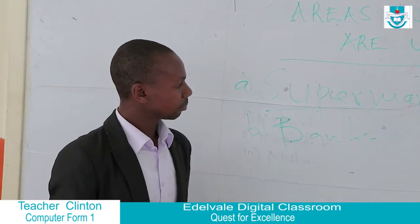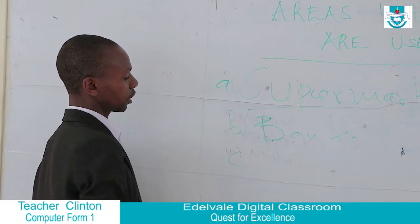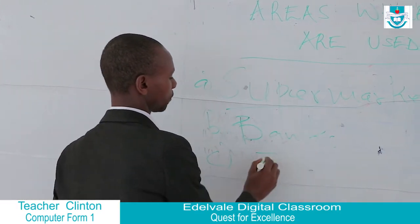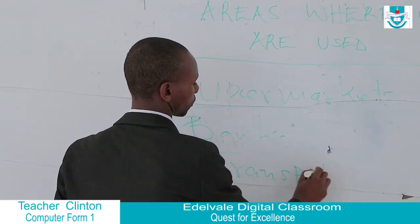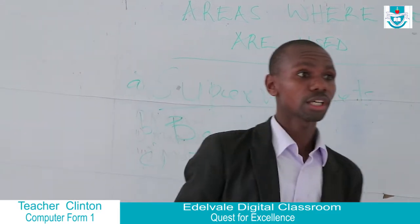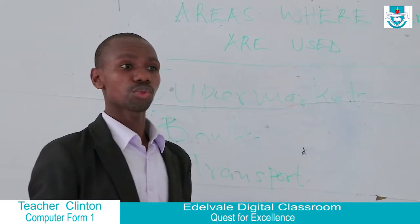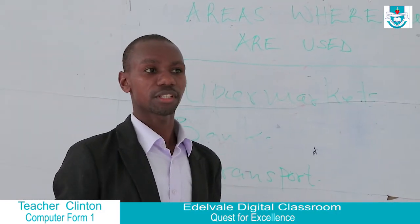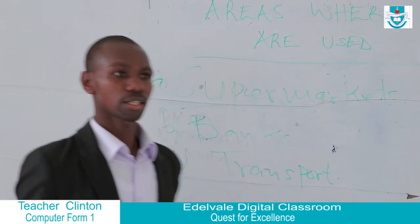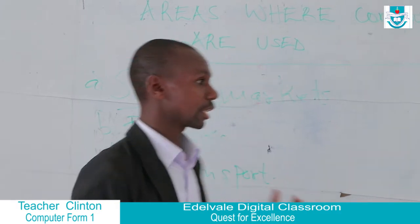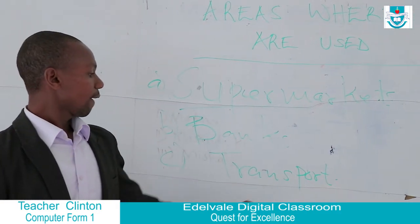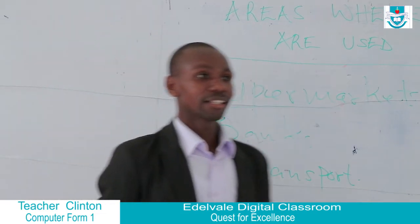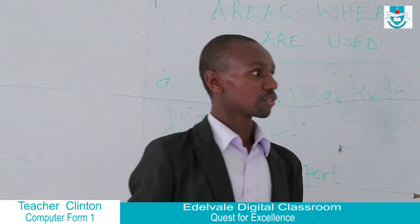The third place where computers are being used is in transport. Computers are being used there to control traffic in major towns. They are being used to control traffic lights.